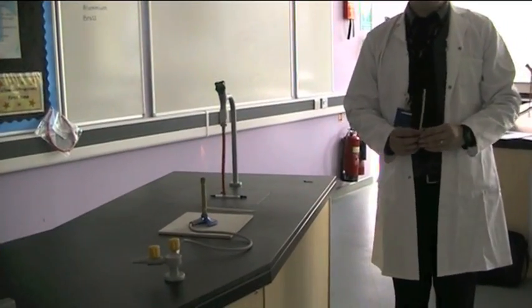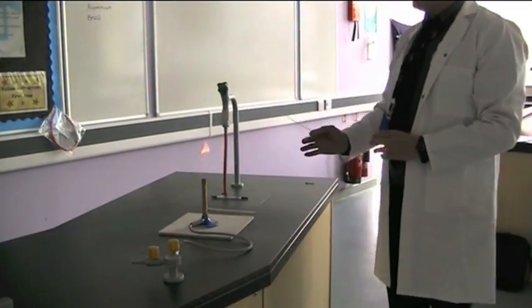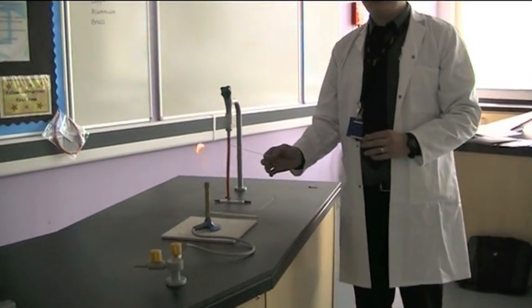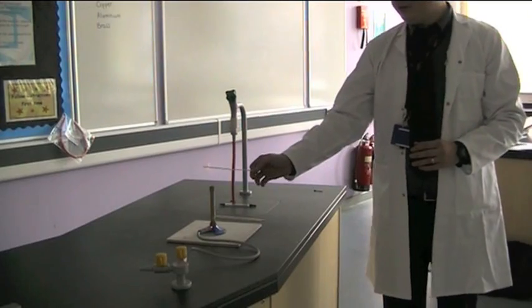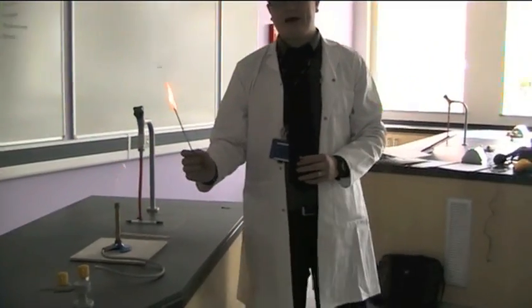Once your Bunsen burner is all set up, you can come over to the teacher's desk with your wooden spill. And you can light it using the Bunsen burner on the teacher's desk. It's important to stand back so you don't burn your fingers. Wait for it to catch light and you're ready to go back to your place.